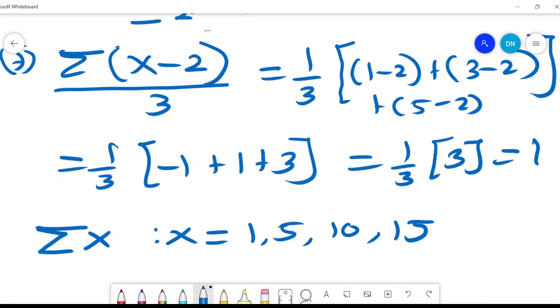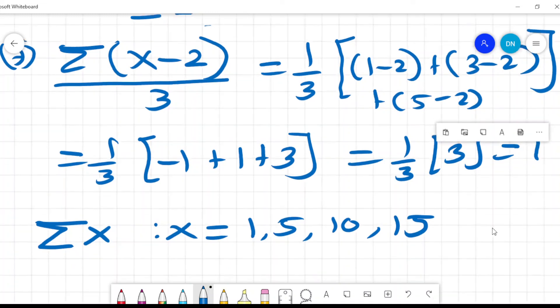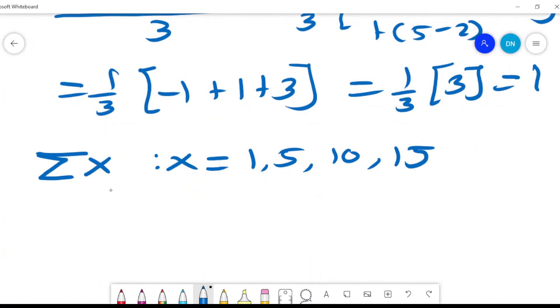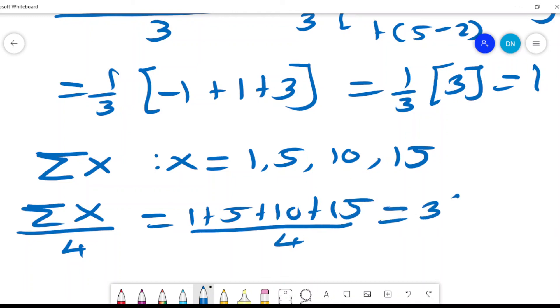Whatever operation that you've been given, maybe you've been told sum x and divide by a number like 4, so it will be 1 plus 5 plus 10 plus 15 divided by 4, which will be summation of x over 4. So that's the steps you take when dealing with the summation sign.